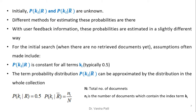Initially, P(Ki|R) and P(Ki|R') are unknown, and different methods exist to estimate these probabilities. With user feedback information, these probabilities are estimated in a slightly different way. For the initial search, when there are no retrieved documents yet, a common assumption is to set P(Ki|R) = 0.5 for all keywords, and P(Ki|R') is approximated by the distribution in the whole collection. Therefore, P(Ki|R) = 0.5 and P(Ki|R') = Ni/N, where N is the total number of documents and Ni is the number of documents containing term Ki.